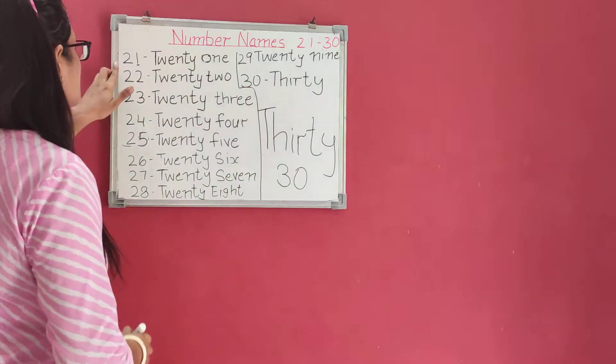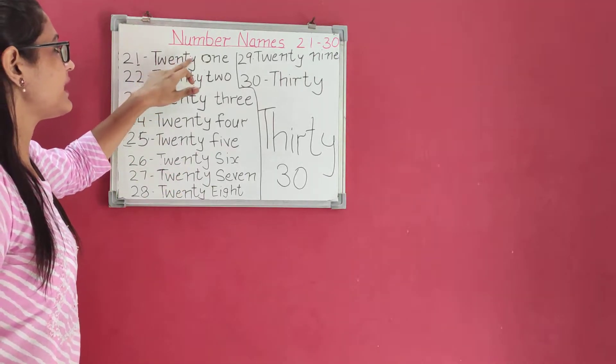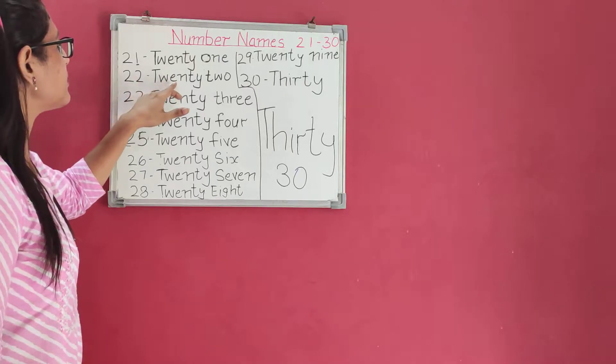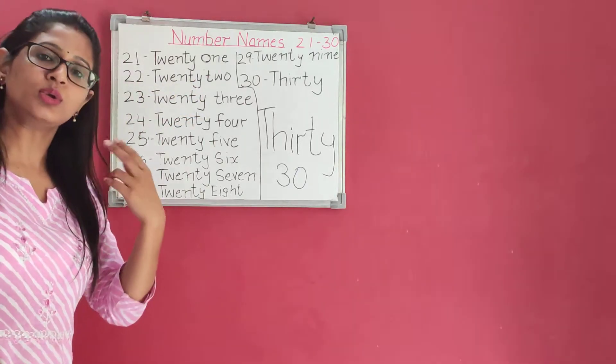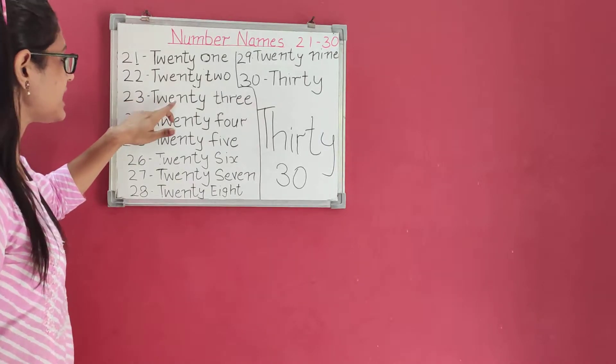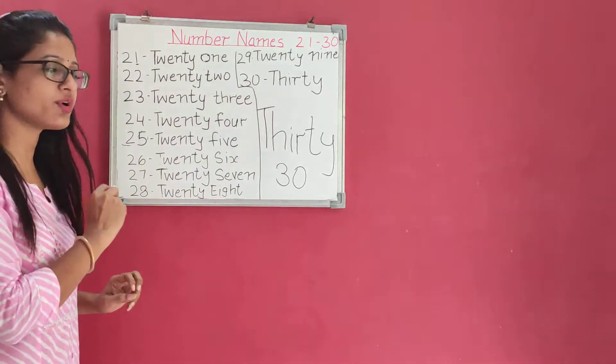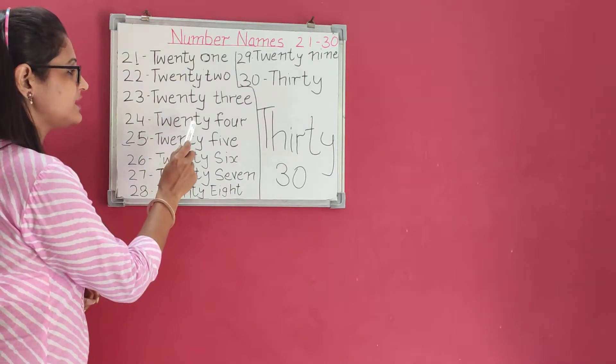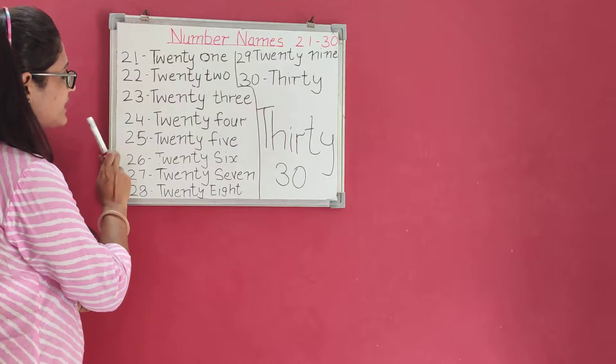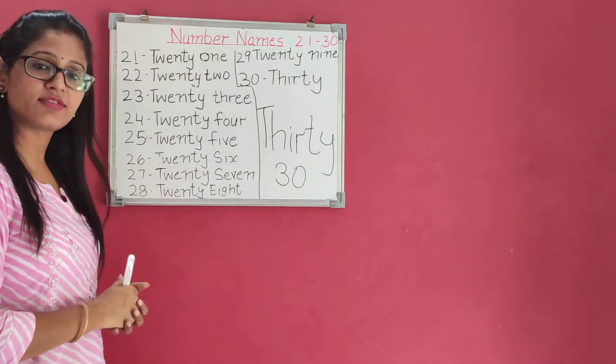Okay. So two one, twenty-one: T-W-E-N-T-Y, twenty, then O-N-E, one. Twenty-one. Two two, twenty-two: T-W-E-N-T-Y, twenty, then T-W-O, two. Two three, twenty-three: T-W-E-N-T-Y, twenty, T-H-R double E, three. Two four, twenty-four: T-W-E-N-T-Y, twenty, F-O-U-R, four. Two five, twenty-five: T-W-E-N-T-Y, twenty, F-I-V-E, five, twenty-five.